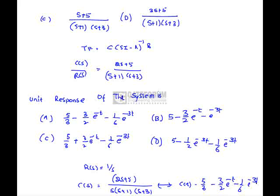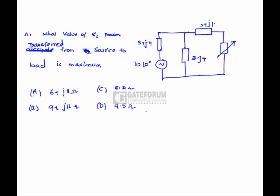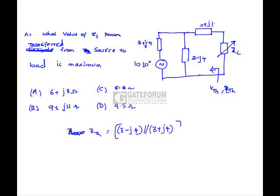For ZL, the power transfer from source to load is maximum. We need to find V Thevenin and Z Thevenin. To find Z Thevenin, we calculate (3 - j4) parallel with (3 + j4), in series with (3 + j4), which equals 7.167 + j4.